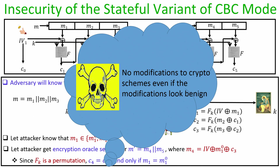This attack was actually launched in an earlier version of the TLS protocol, where implementers mistakenly believed the stateful variant of CBC mode would be CPA secure. This weakness was exploited in what is known as the BEAST attack, which was only later formally identified. The lesson is: never make any modification to a cryptographic scheme that has been formally proved secure without also formally proving the modified scheme is secure.